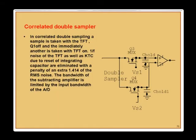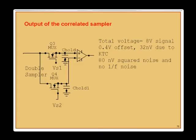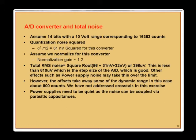In correlated double sampling, a sample is taken with TFT Q1 off and immediately another with TFT on, removing 1/f noise. This also eliminates amplifier reset noise. With an extra amplifier, the RMS noise increases by square-root of 2, but it is still an advantage. After CDS, you have 8 volts total, 0.4 volts offset, 32 nano-volts of KTC, 80 nano-volts squared noise, and no 1/f noise. For a 14-bit, 10-volt-range converter, quantization noise sigma-squared/12 equals 31 nano-volts, and after normalizing gain to 1.2, total RMS noise is about 398 micro-volts — less than the 610 micro-volt step size of the A-to-D.